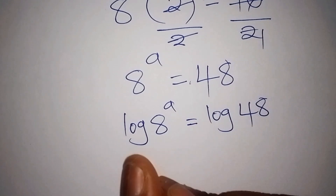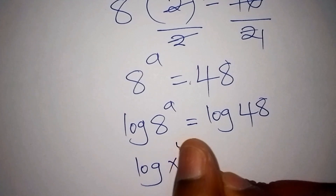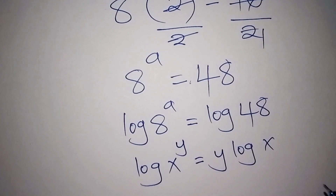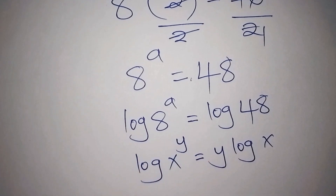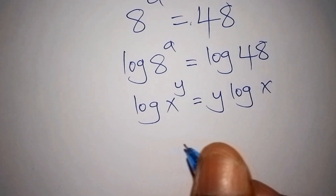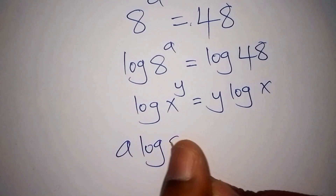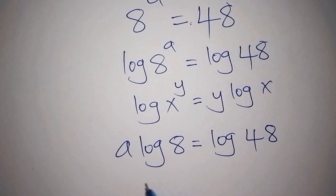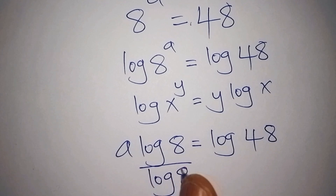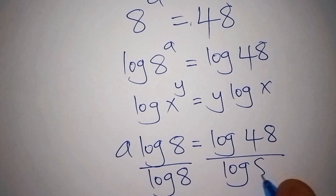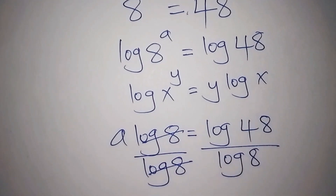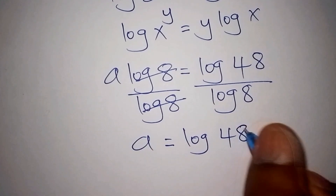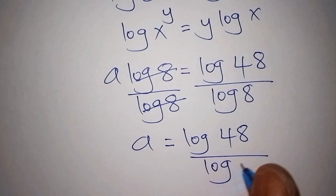Assuming we have something like log of x to the power of y, this can also be written as y times log of x. So log of 8 to the power of A can be written as A times log 8 equals log of 48. To isolate A, we divide both sides by log 8, so log 8 cancels and we get A equals log 48 over log 8.